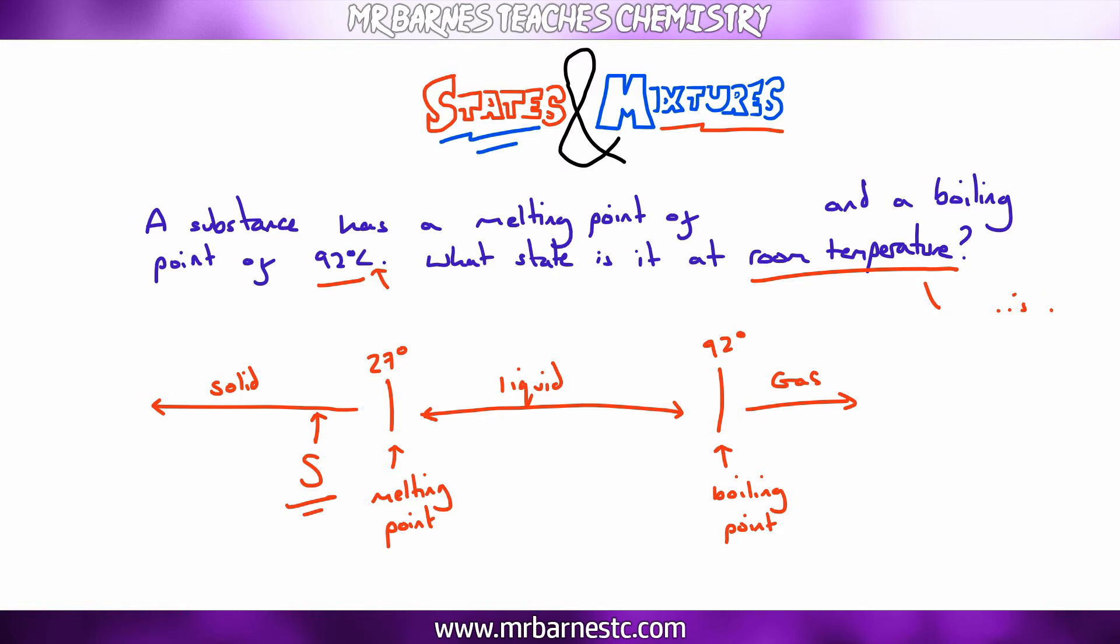If I look at another example, I have a melting point of minus 200, and a boiling point of 40. You can see that 21 is going to be in between minus 200 and 40. If it's in the in between bit, it's a liquid.